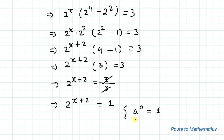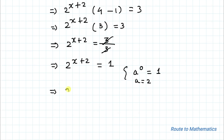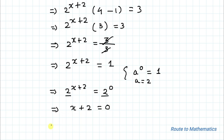Now applying the exponential law a^0 equals 1, with a equals 2, we can write 2^(x+2) equals 2^0. Since the bases are equal on both sides, we can equate the powers: x plus 2 equals 0.